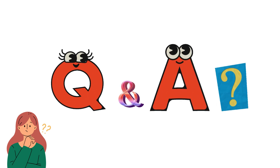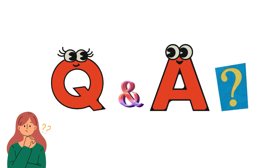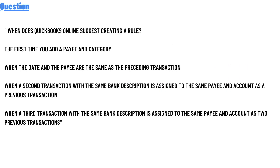Our today's question is: when does QuickBooks Online suggest creating a rule? The options are: when you first add a payee and category, when the dates and the pay are the same as the existing transactions, or when a second transaction with the same bank description is assigned to the same payee and accounts as a previous transaction.